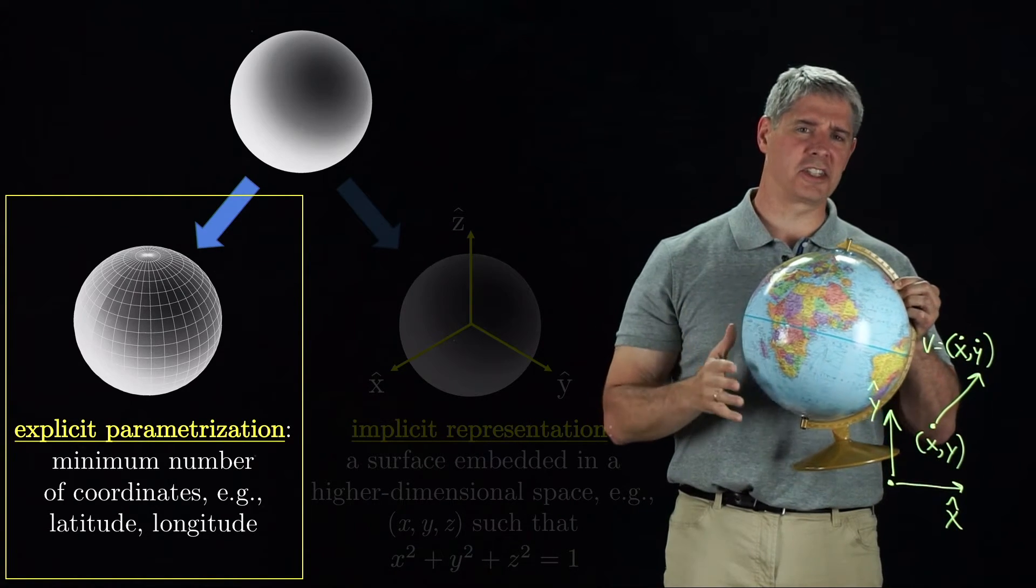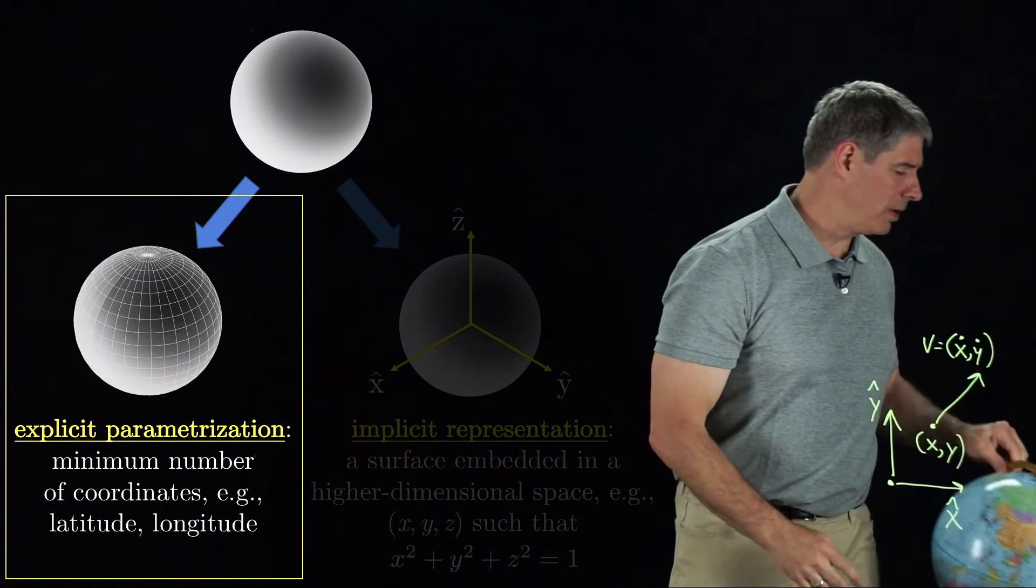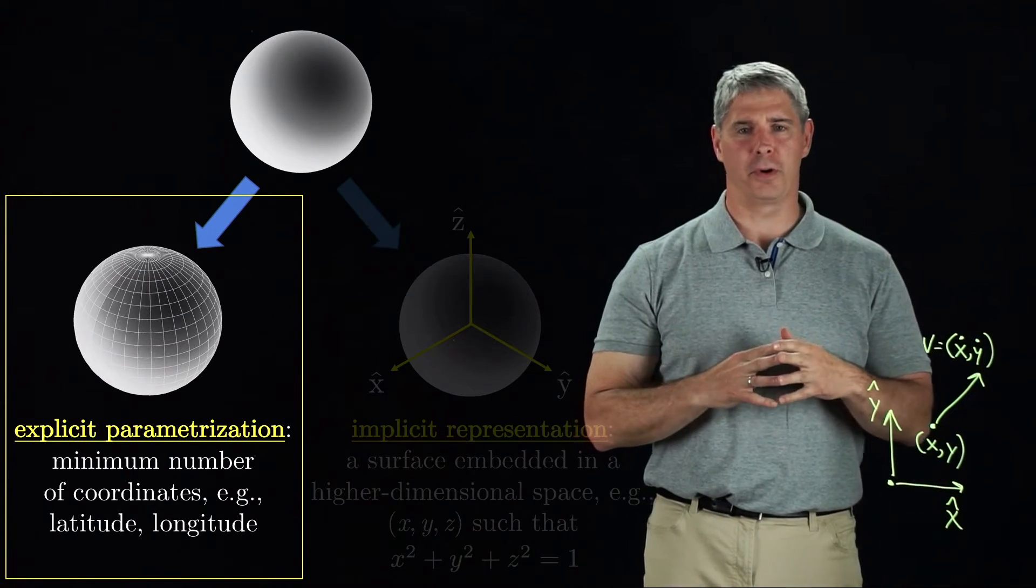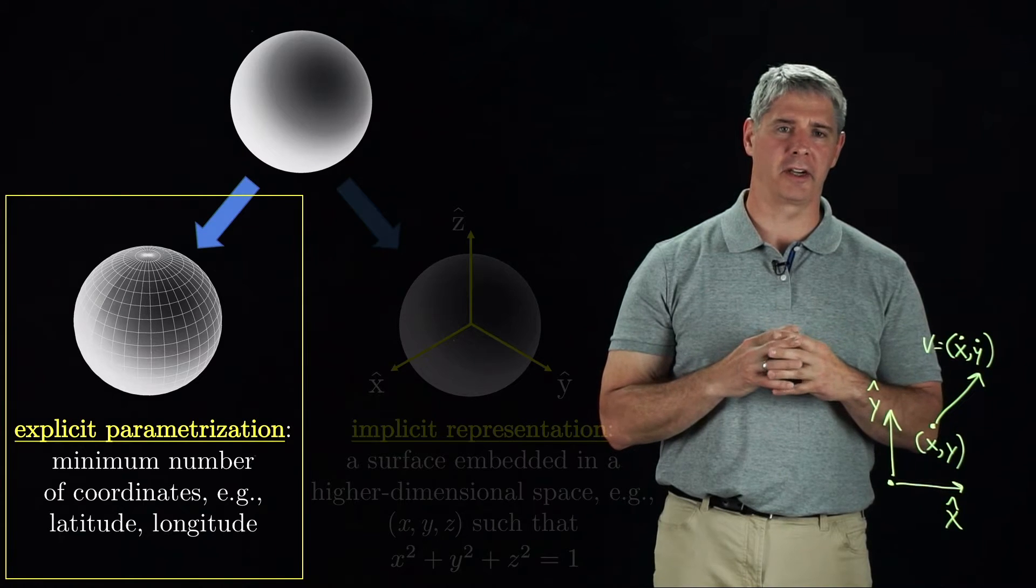The North Pole is called a singularity of the representation. Also, the moment you step over the North Pole, your longitude changes by 180 degrees.